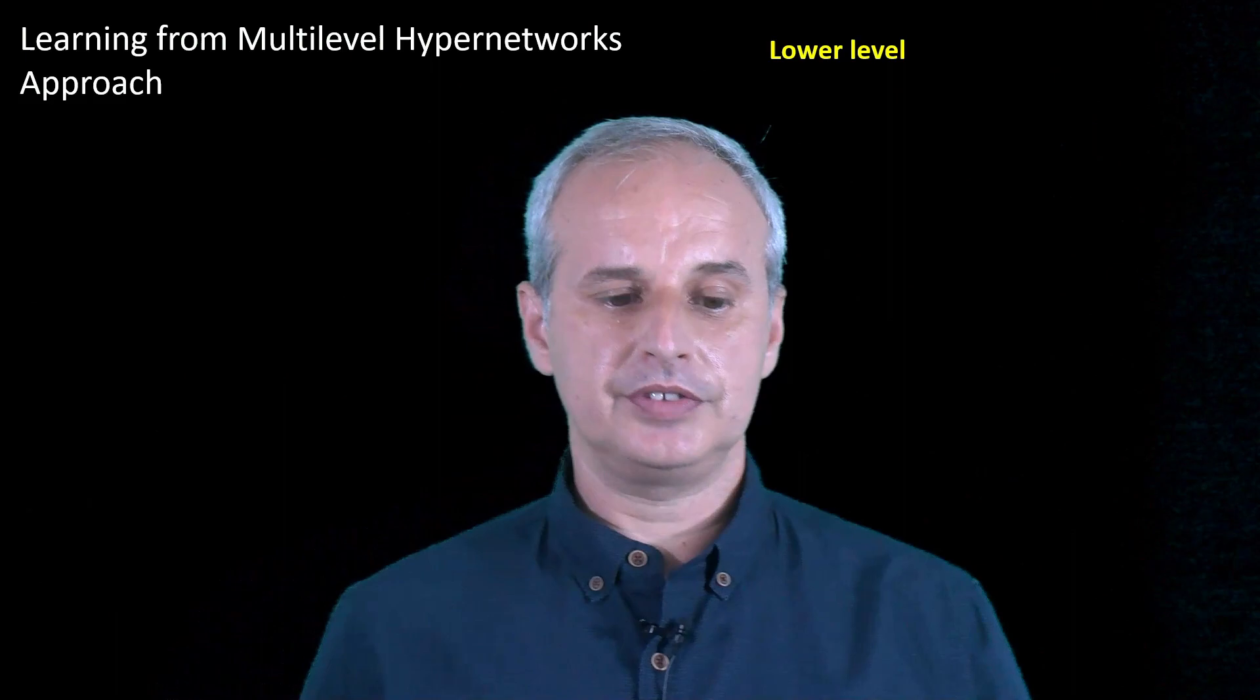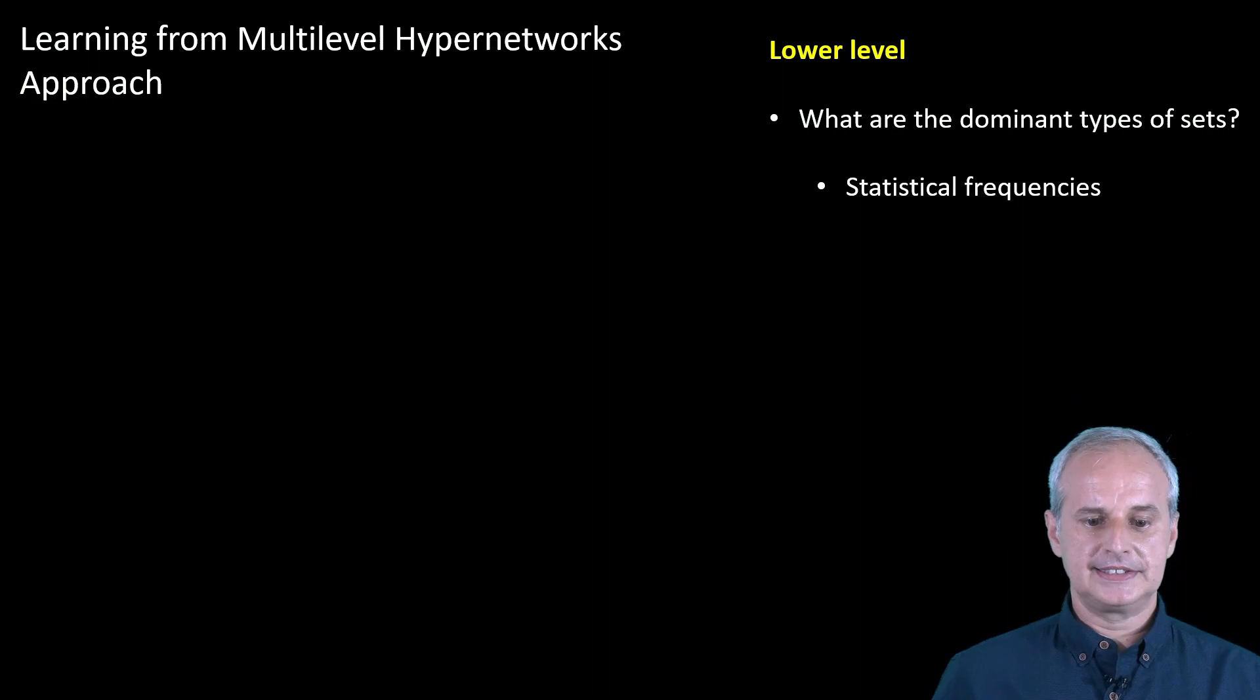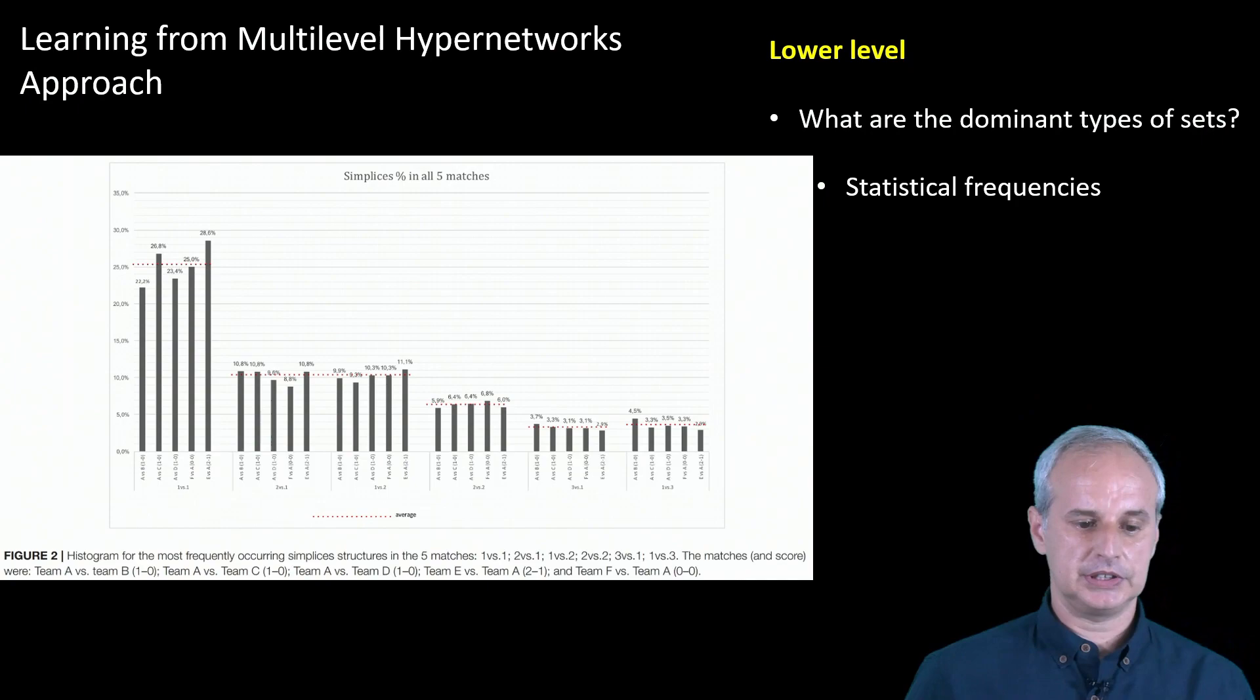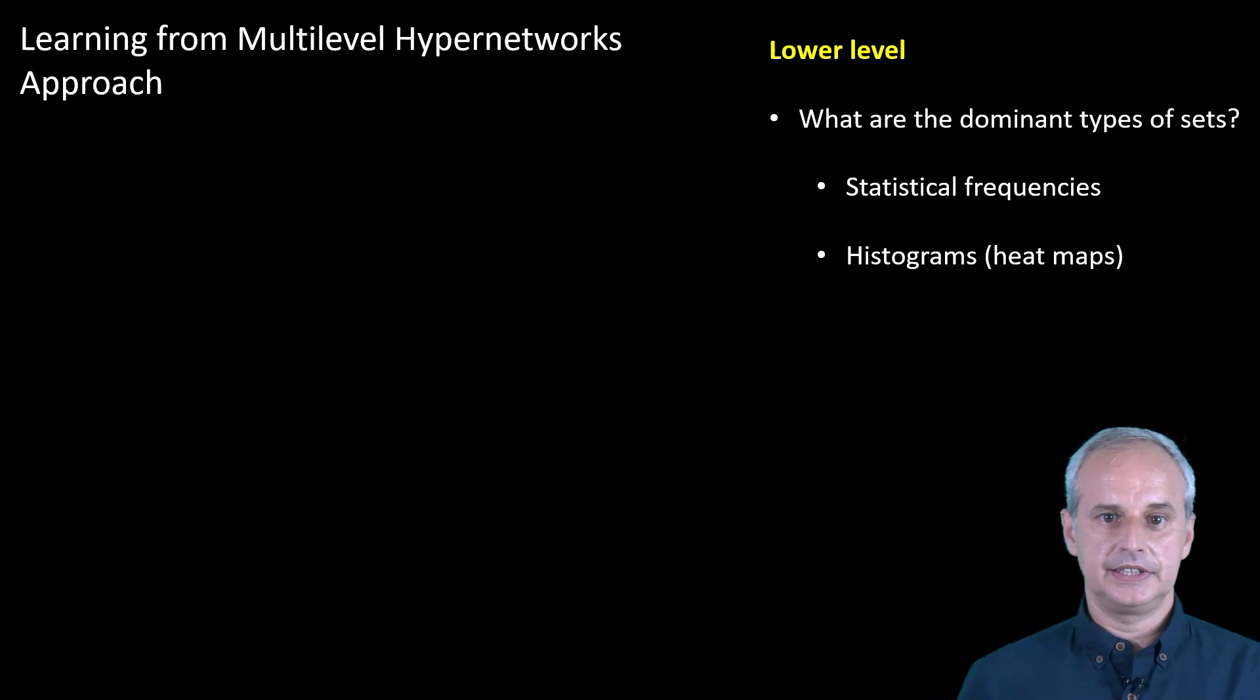So what can we learn from multi-level hypernetworks approach? At the first level, the lower level, we can analyze what are the types of sets that are formed. We can see it in the statistical frequencies. We see that the 1 vs 1 are the most often sets, then 2 vs 1, 1 vs 2, 2 vs 2, 3 vs 1 and 1 vs 3.